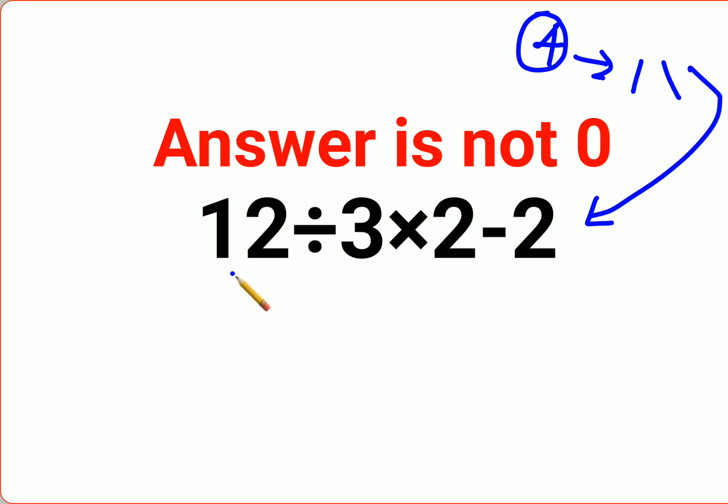So today's question is 12 divided by 3 into 2 minus 2, and a lot of people thought that the answer for this one is supposed to be 0. Now that is absolutely wrong.